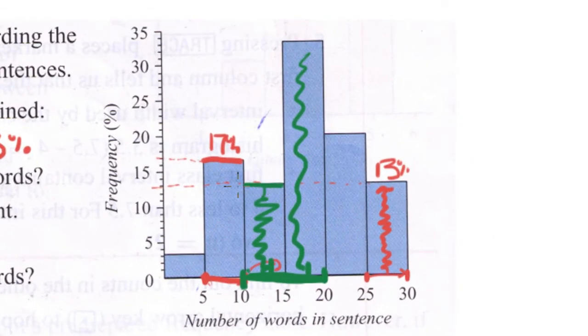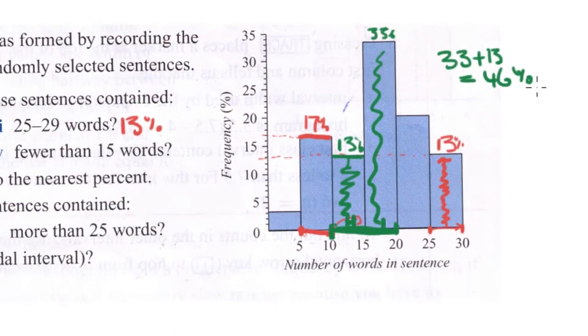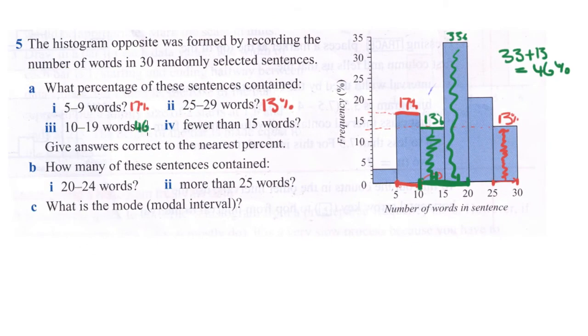This percentage at the height of this bar is 13% and this percentage up here at the height of this bar is 33%. So we add the two together: 33 plus 13 is 46%. That's the answer to that one.